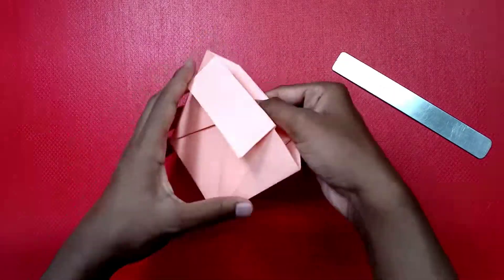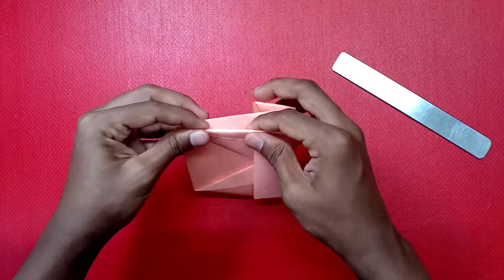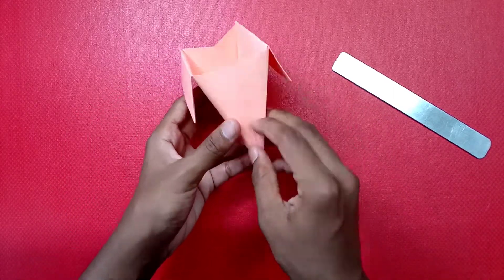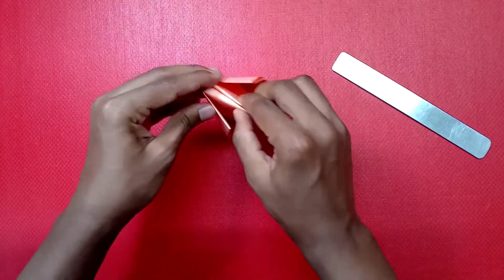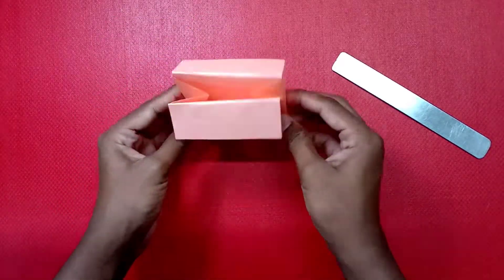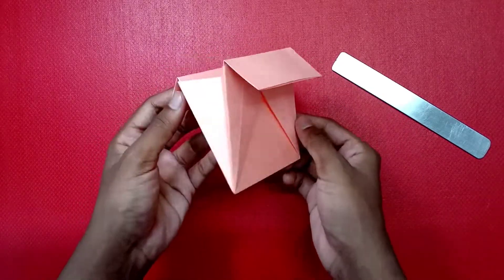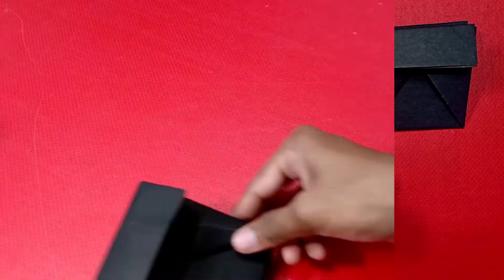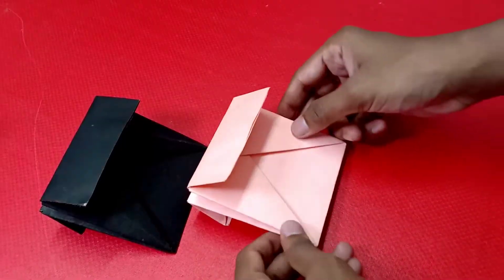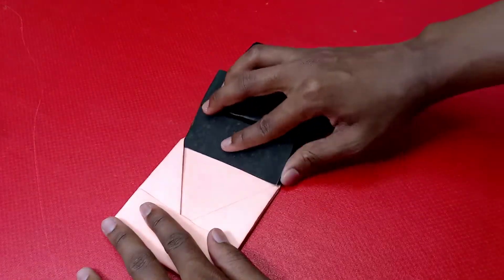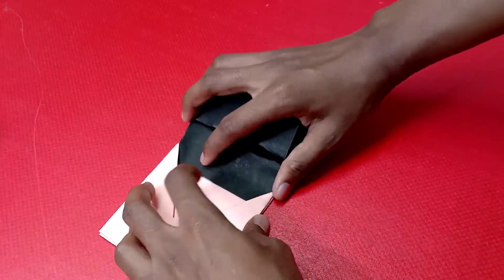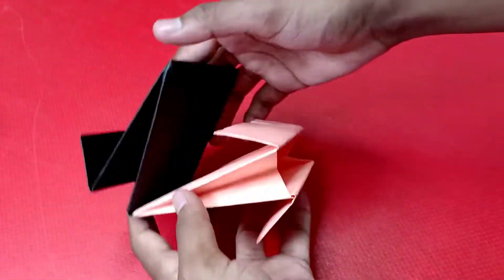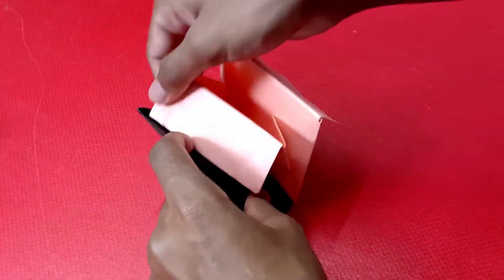Then open it and along this line push it inward and press it down. Repeat it on the other side. Now you will end up with the pocket. You will need few more like this. Now let me show you how to connect them together. Take two pieces and using the flap insert it in the pocket here.